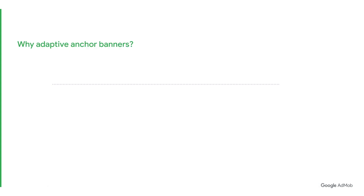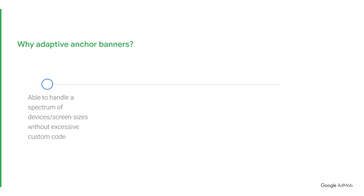So why are Adaptive Anchor Banners better for your apps than standard and smart banners? Adaptive Anchor Banners are designed to automatically serve the best banner size across all devices or screens. This offers several advantages. Firstly, it allows you to handle device fragmentation without writing excessive code. The Adaptive Anchor Banner API automatically returns a perfectly sized ad, so you don't have to write separate code for each device or screen size you wish to serve ads on.